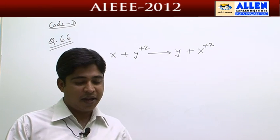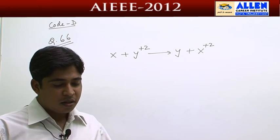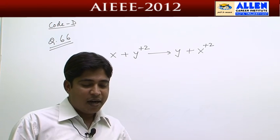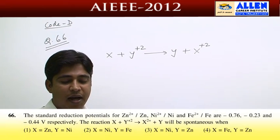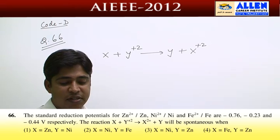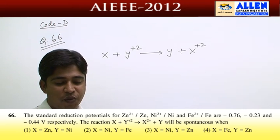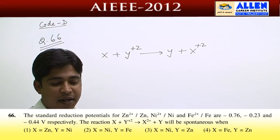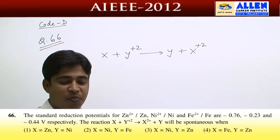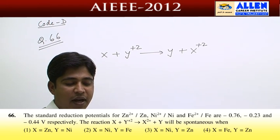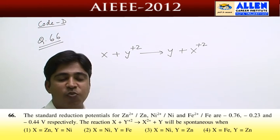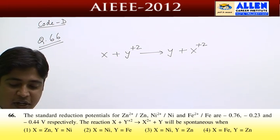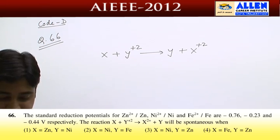Question number 66. The standard reduction potential for zinc, nickel, and iron are minus 0.76, minus 0.23, and minus 0.44 respectively. The reaction x plus 2y to 2x plus y will be spontaneous. This is an easy electrochemistry question.